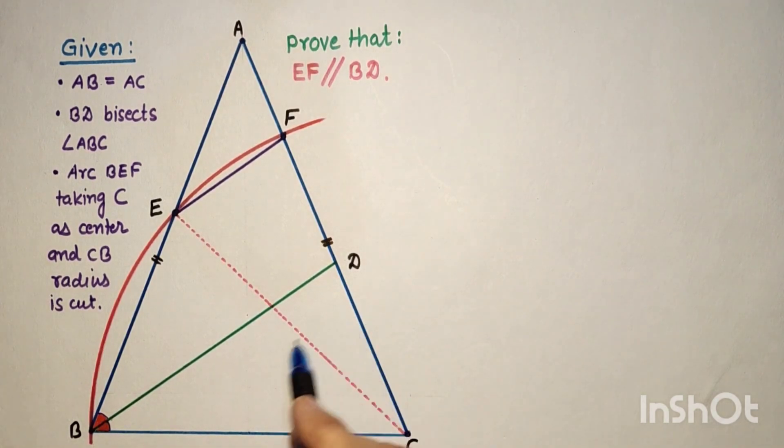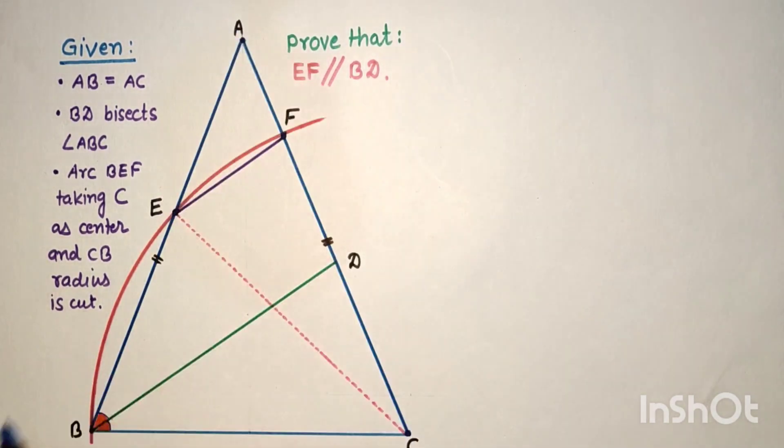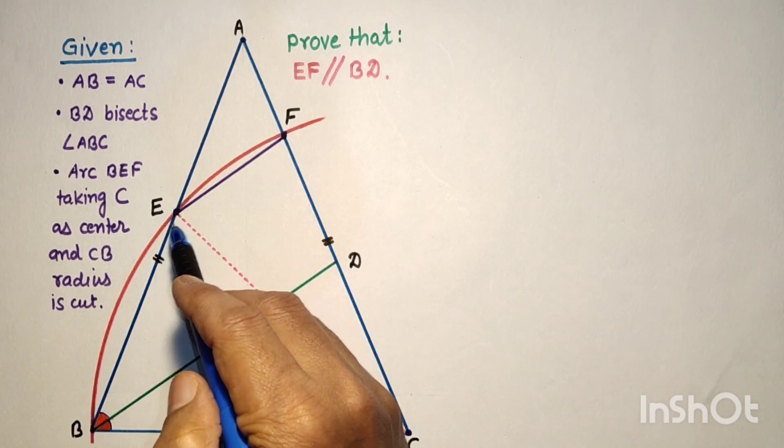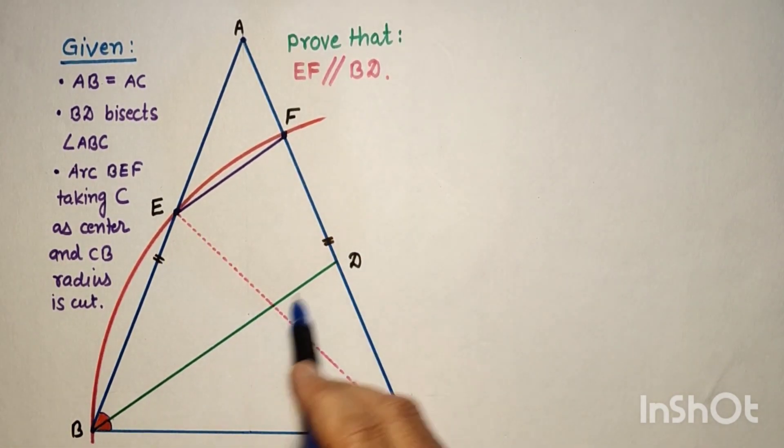BD is the angle bisector which bisects angle ABC, meaning this angle equals this angle. We have to prove that segment EF is parallel to segment BD.